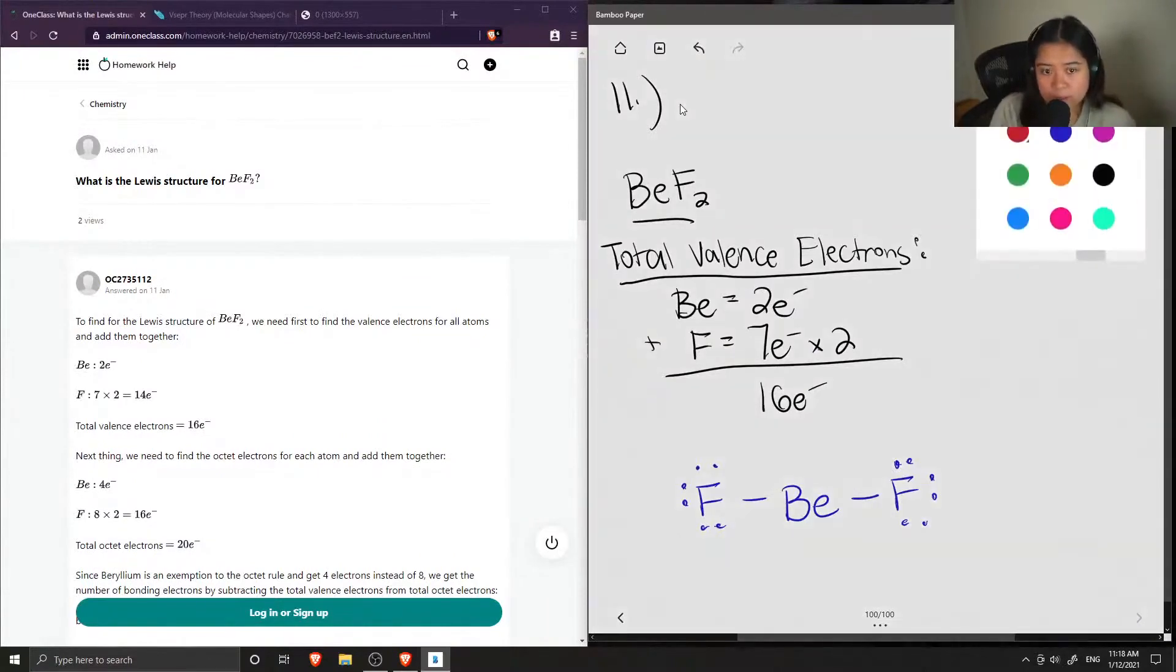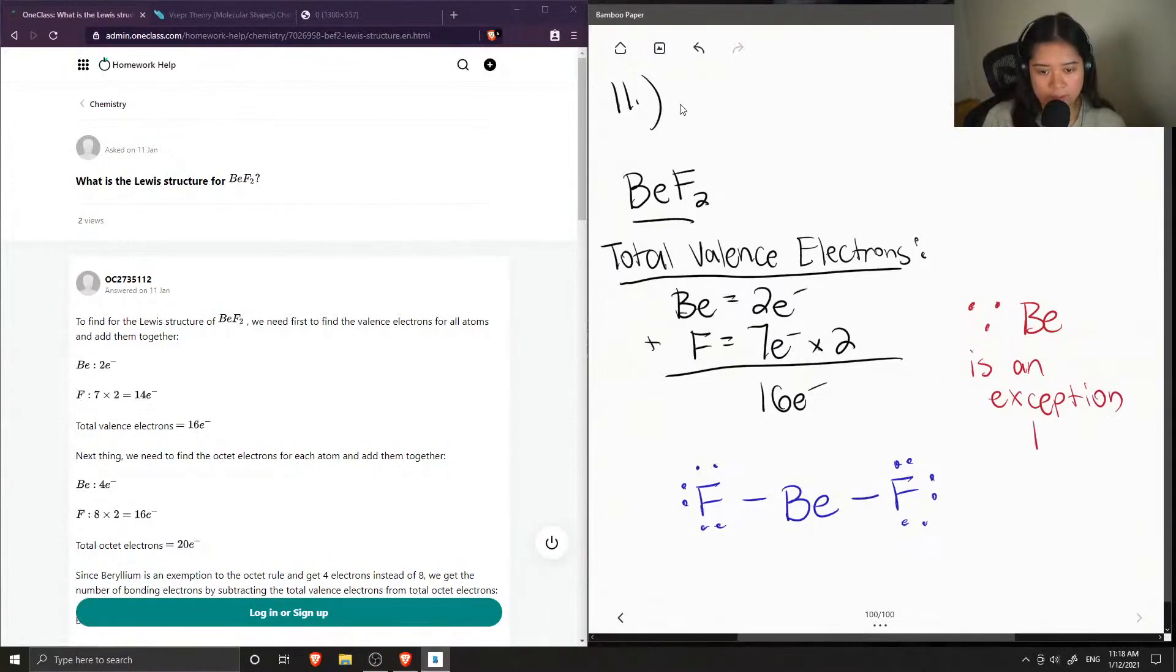So you'll notice that beryllium doesn't have a full octet, but this is okay since beryllium is an exception to the octet rule.